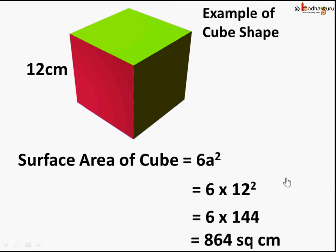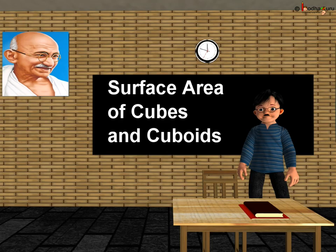So what we have learned in this lesson, surface area of cuboid is 2 times LB plus BH plus LH and surface area of cube is 6 times a square where a is the length of its side. That's all in this lesson children, bye bye.